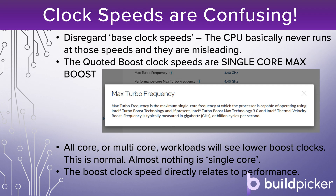Clock speeds are confusing. Intel has a habit of listing base clock speeds that are misleading because the CPU basically never runs at those speeds. The quoted boost clock speeds are the single-core maximum boost. All-core or multi-core workloads will see lower boost clocks as the CPU throttles to maintain power and thermal levels — this is completely normal and almost nothing runs in pure single-core mode, not even games. So don't be surprised if you buy a CPU quoting 4.4 GHz and see it running at 4.2 GHz under full load. The boost clock does directly relate to performance, and lifting that boost clock either via overclocking or buying a higher-binned CPU does translate to slightly higher performance.